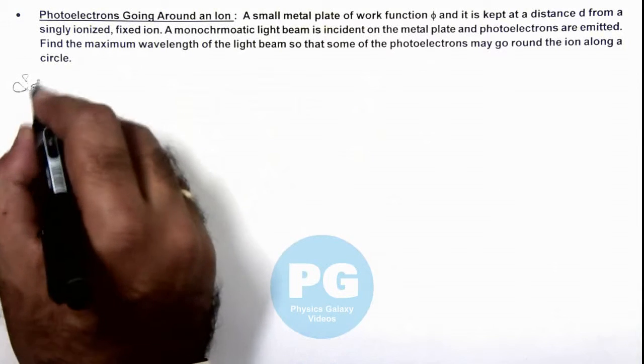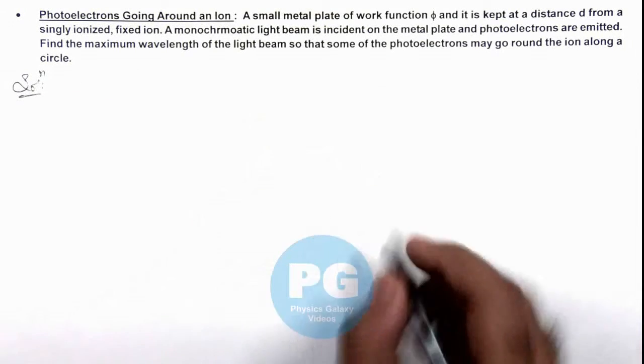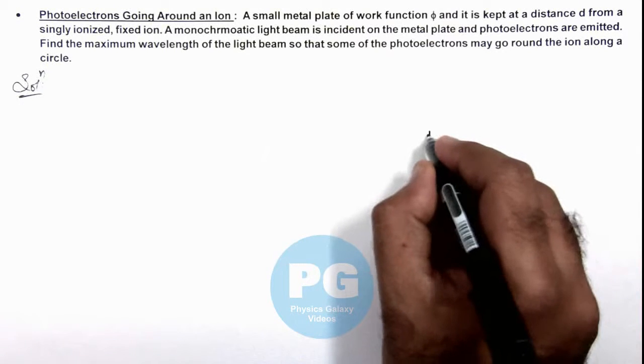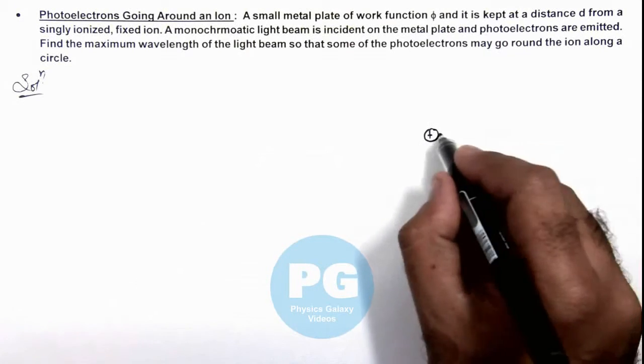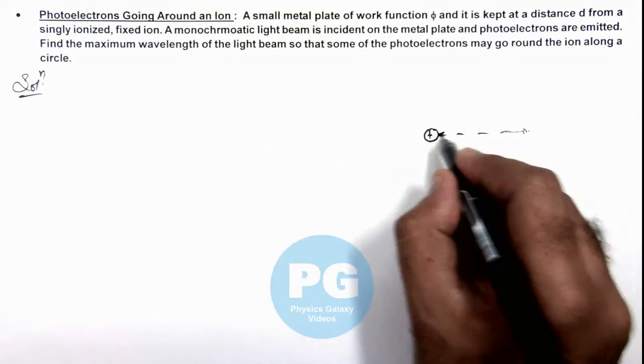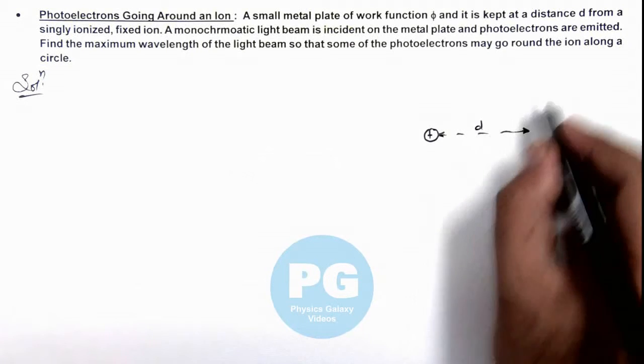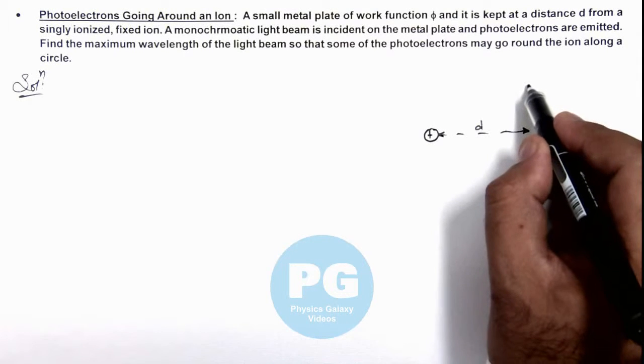Here we can simultaneously draw the situation also. If this is a fixed ion, and at some distance from the ion, which is given as d, we have kept a small metal plate.